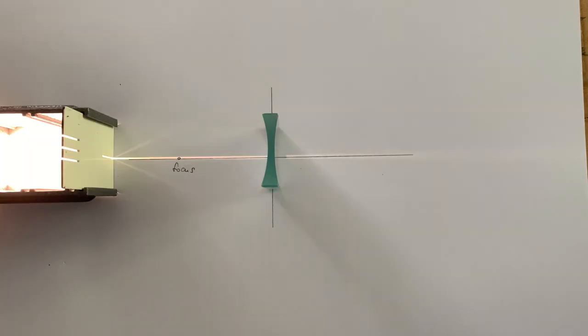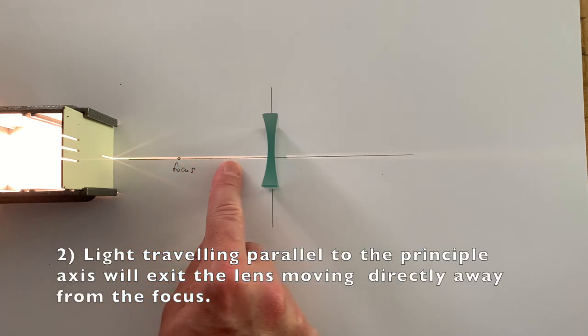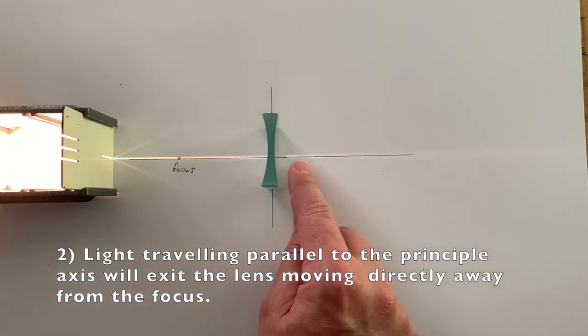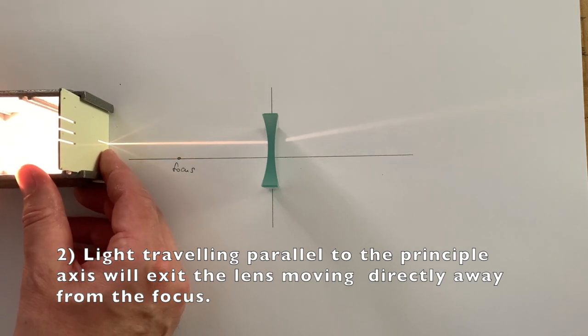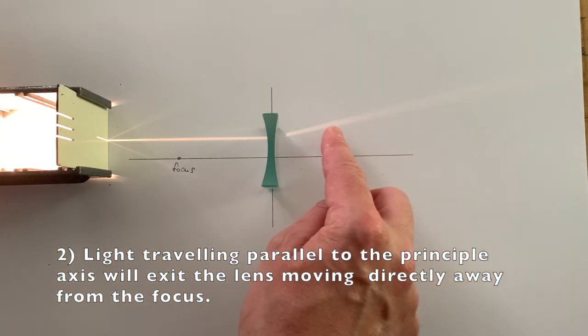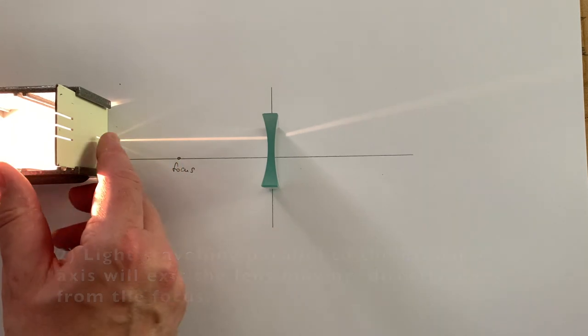The second property is that any light travelling parallel to the principal axis, the line that travels through the centre of the lens, will always leave the lens in such a way that it moves directly away from the focus on the left hand side of the lens.